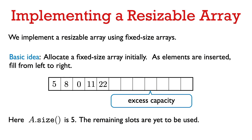As long as the capacity is larger than the size, we have room to push back more elements in our fixed size array. We push back an element into the leftmost available slot. Since we're using a fixed size array, we can implement get and set just from the analogous operations on the fixed size array. In this example, we're storing five elements, so the size is five, but the fixed size array is larger than five — those extra slots are called the excess capacity. As long as there's excess capacity, we can keep pushing back elements.